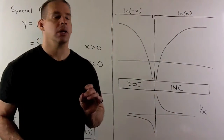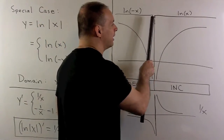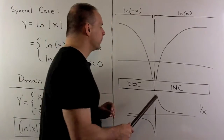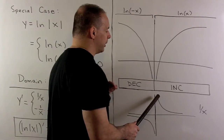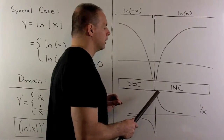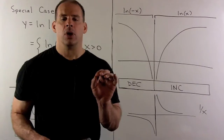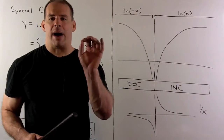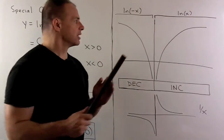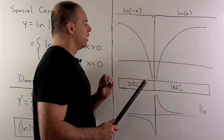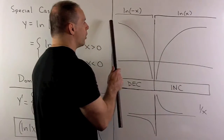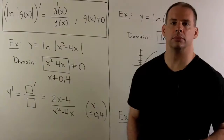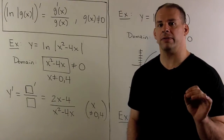Comparing the graphs: natural log of x is defined only to the right of the y-axis. Since it's increasing everywhere, its derivative is always greater than or equal to zero, consistent with one over x for x greater than zero. When we take the absolute value, we add a reflected piece to the left of the y-axis — natural log of minus x. Putting minus x into the function flips the graph over the y-axis. On that left piece the function is always decreasing, so the derivative is always less than or equal to zero — consistent with one over x for x negative.